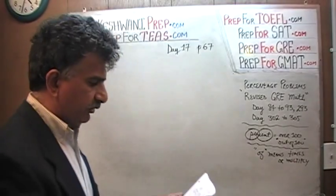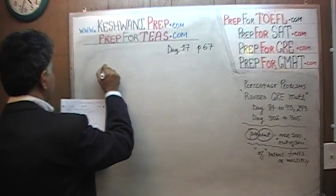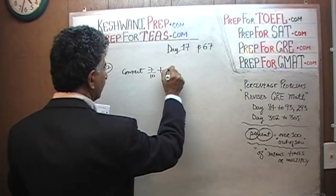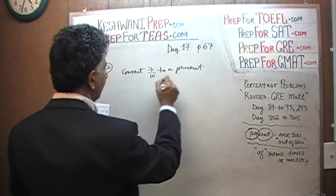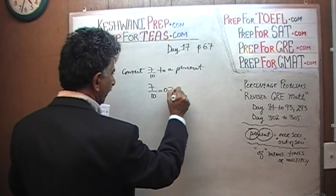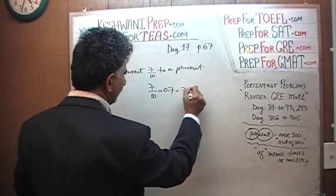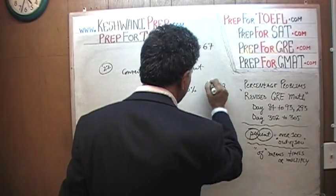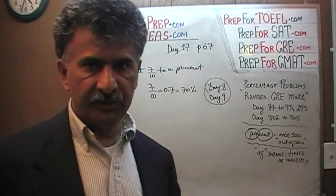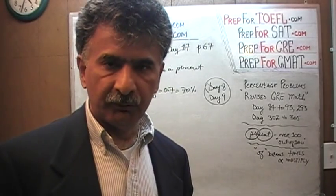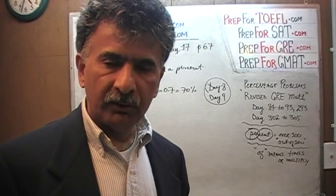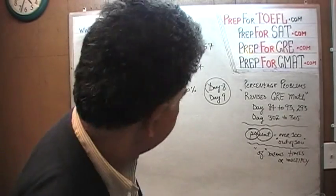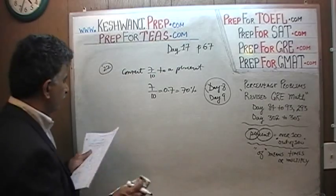Number two, problem 22, says convert 7 tenths into a percent. Now, this is just silly. 7 tenths, of course, we know is 0.7, and everybody knows that that's 70%. Again, we did all of these things on day 8 and day 9 — on those two days we did all of these percentages: the tenths, the fifths. Of course, tenths and fifths, they come in pairs. Then we did the quarters and the eighths, and then we did the thirds and the sixths, because the sixth is just half of one-third. It's 0.7 or 70%.